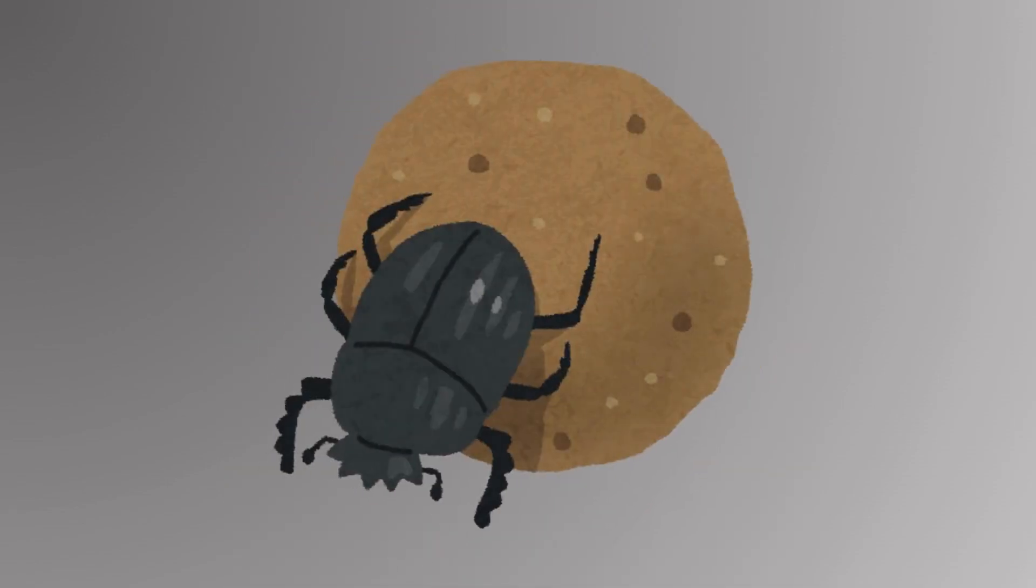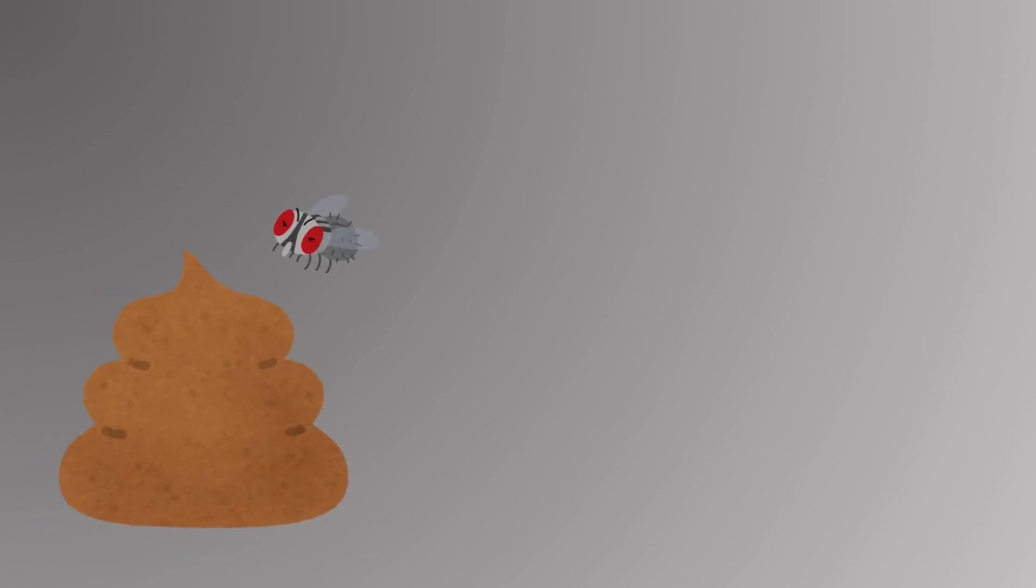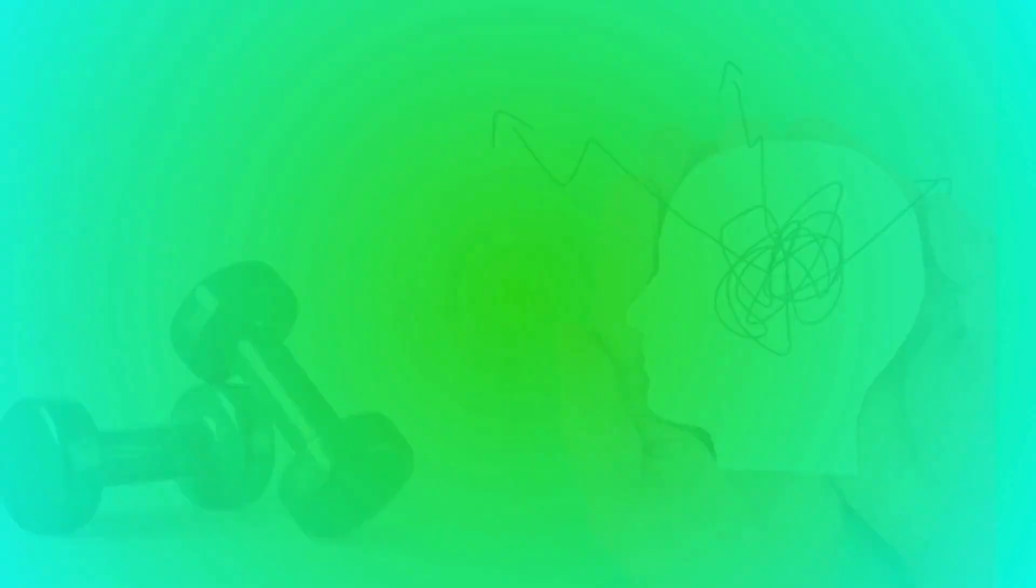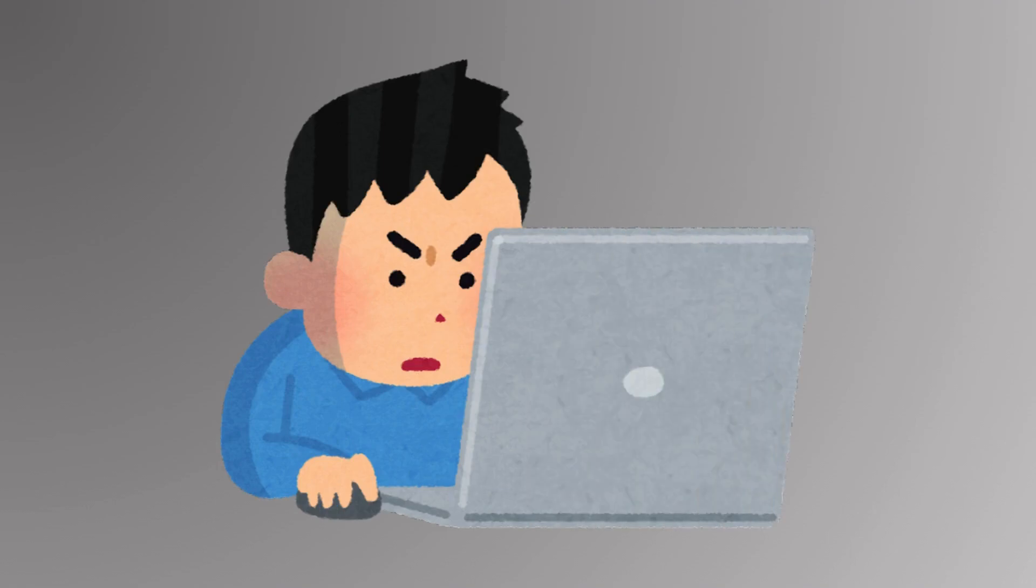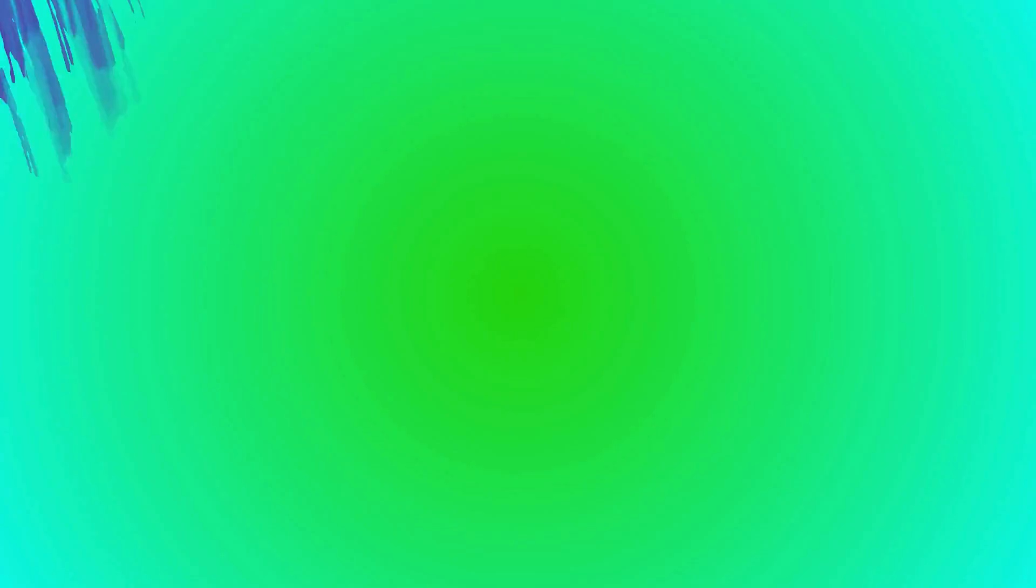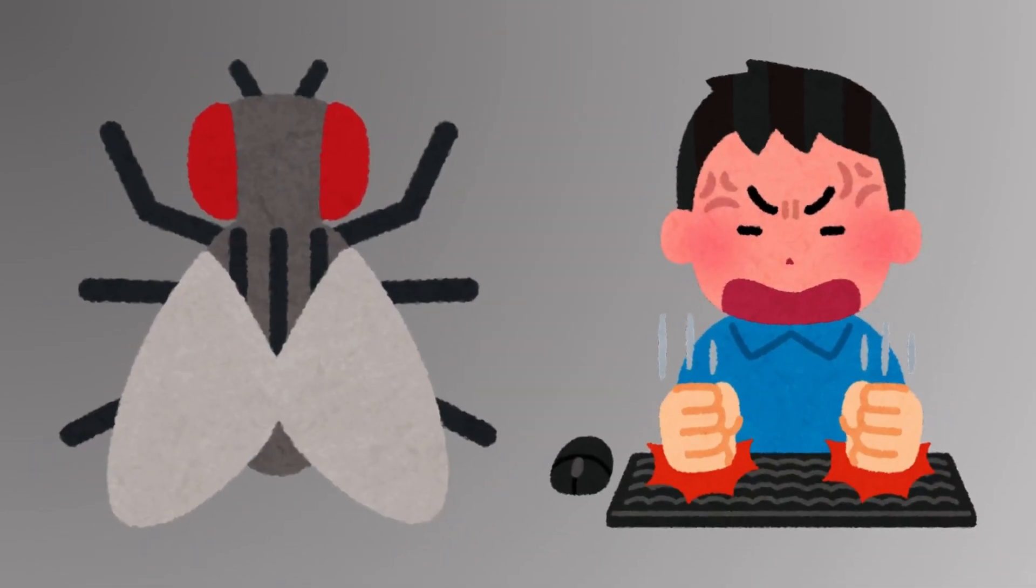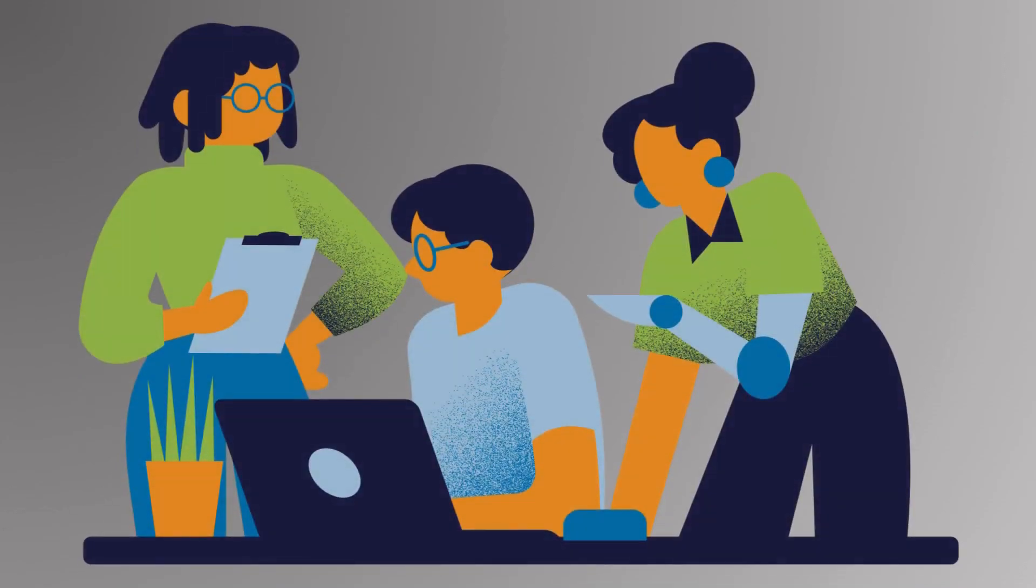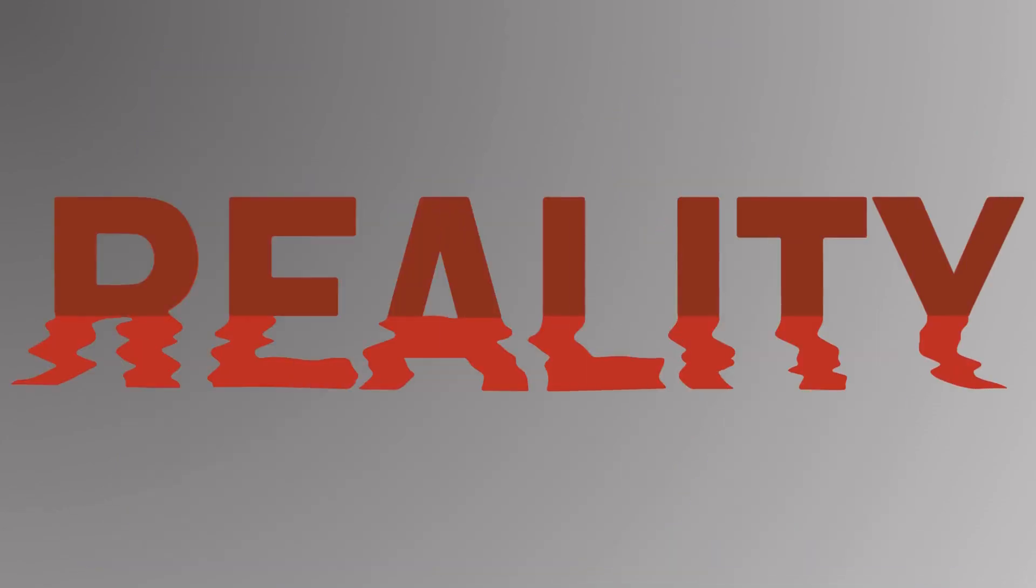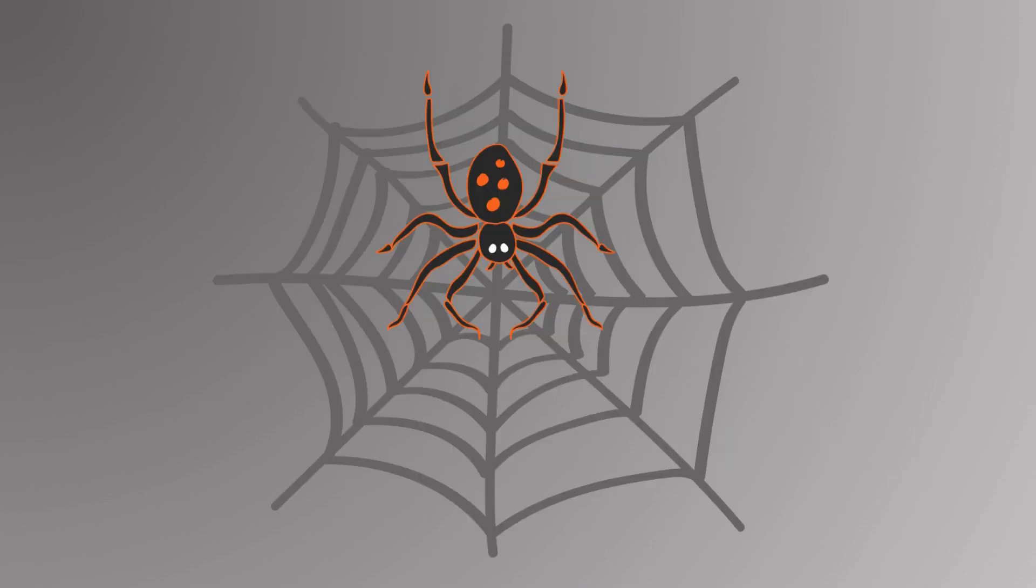How humans interpret bug actions: Humans often interpret insect behavior through our own emotional and cognitive lens, attributing intentions or meaning to their actions. For example, anthropomorphism - we might think a fly is annoying us or a spider is trying to scare us, but these are human projections. In reality, the fly is seeking food and the spider is minding its web.